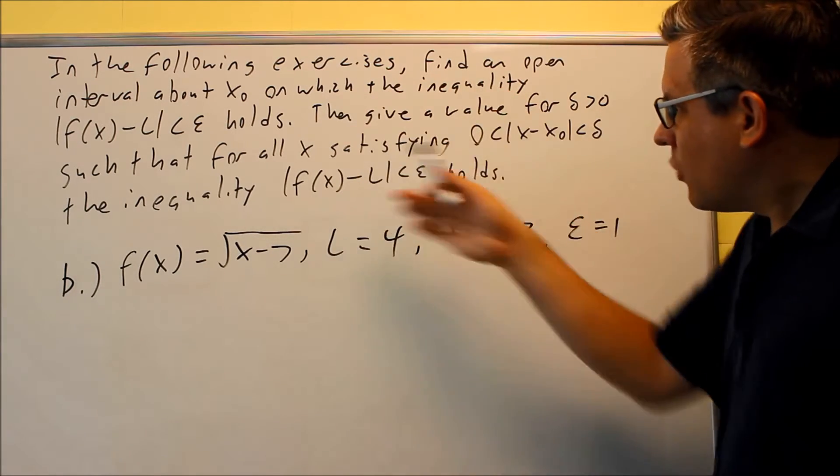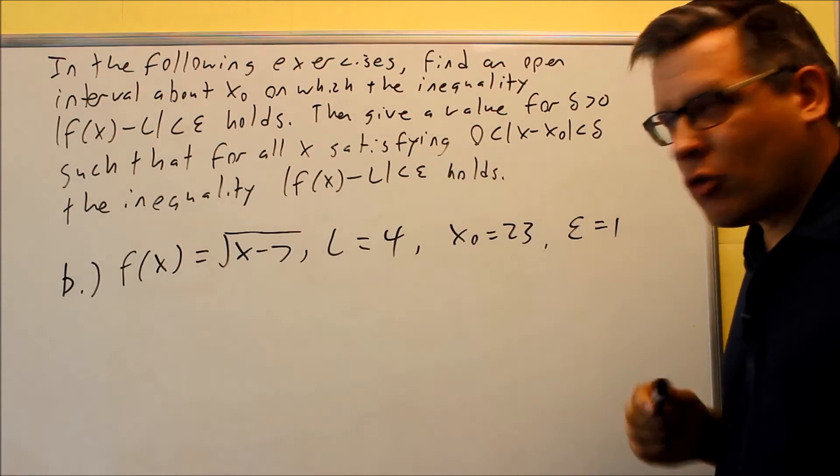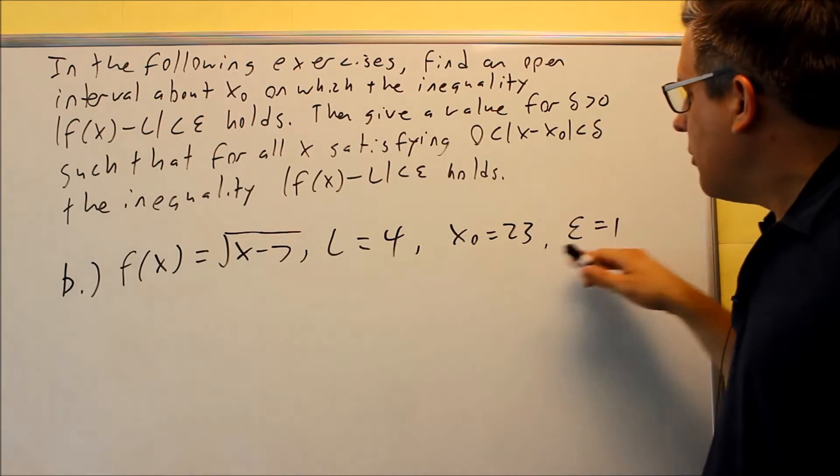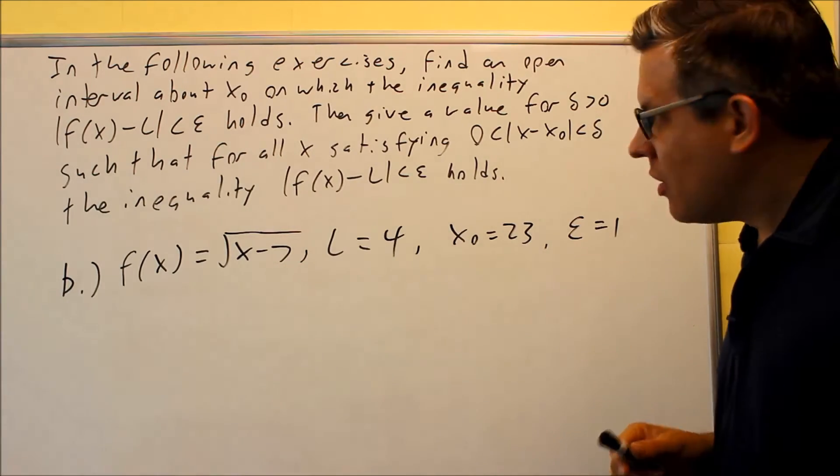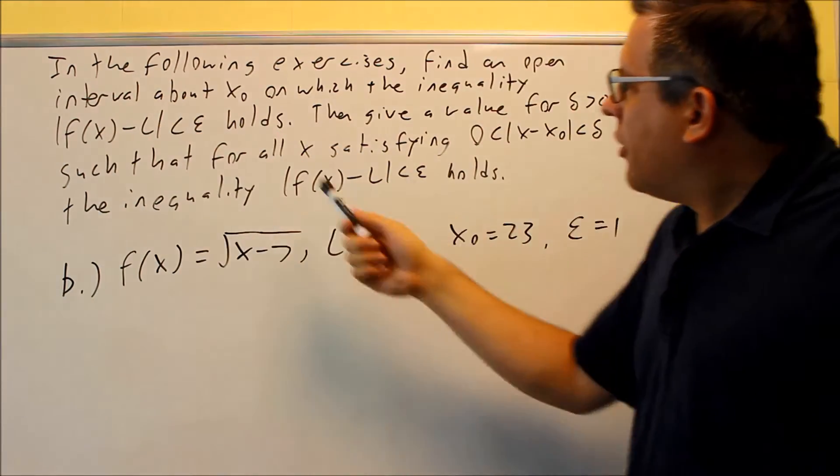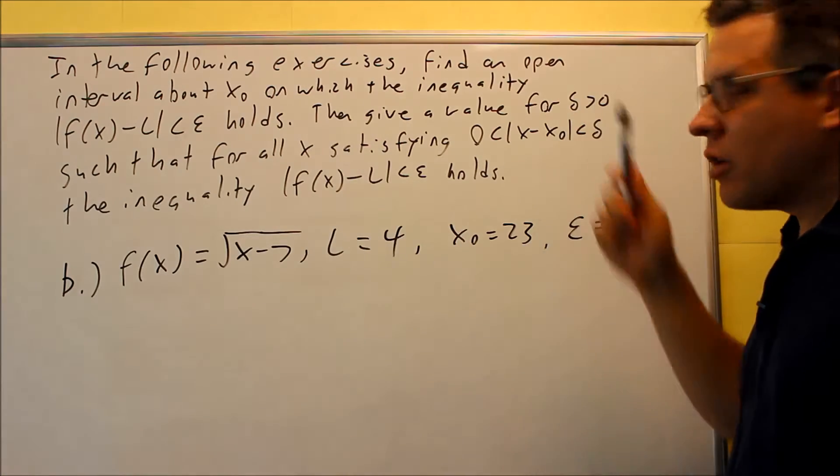Okay, for part B, we have the same instructions that we had before for part A. We just have some different information that's been provided this time. Still, the first thing you want to do is we're going to take care of this part. We're going to find that open interval, and then we're also going to find the delta.